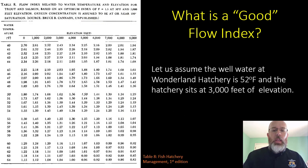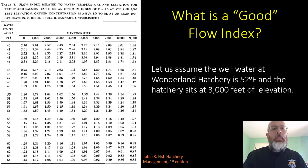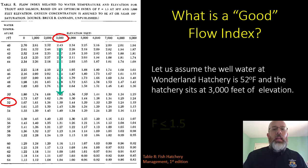We go to Table 8 from the first edition of Fish Hatchery Management. Let's assume the well water at Wonderland Hatchery is 52 degrees Fahrenheit, and the hatchery sits at an elevation of 3,000 feet. Following the table across the top showing elevation, we find the 3,000-foot elevation column, then follow it down to 52 degrees Fahrenheit. That gives us a maximum flow index of 1.5, so we don't want our flow index at this hatchery to go above 1.5.